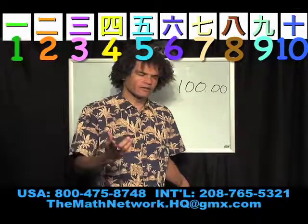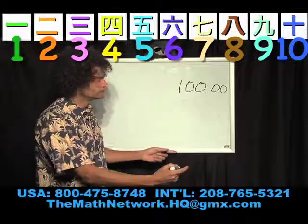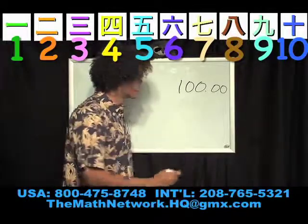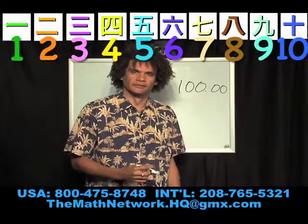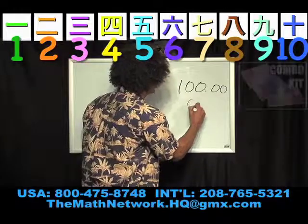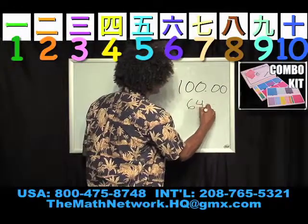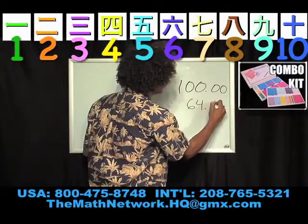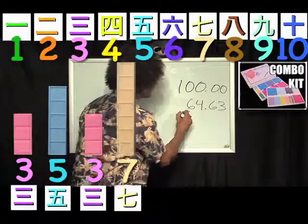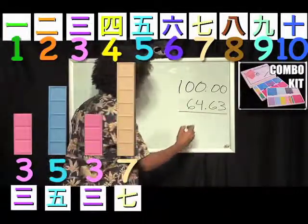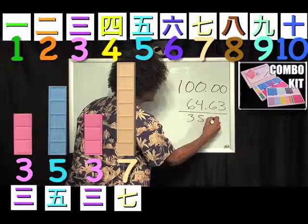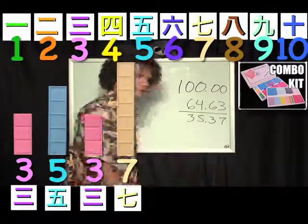Give me another number, quick. 64, 63. What do I have to do? Build a 9. Need a 3. Need a 5. Need a 3. Need a 7. Done. It's that easy.